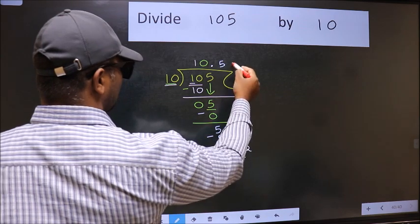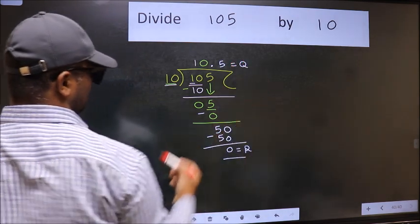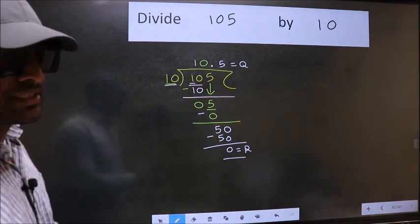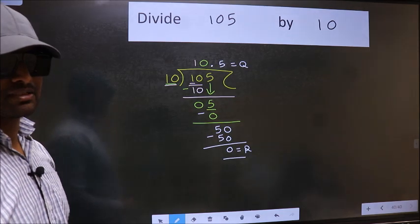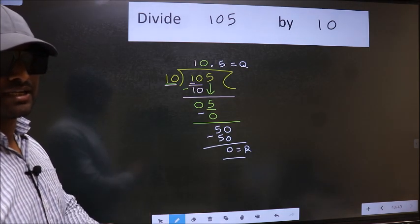This is our remainder, and this is our quotient. Did you understand where the mistake happens? You should not do that mistake.